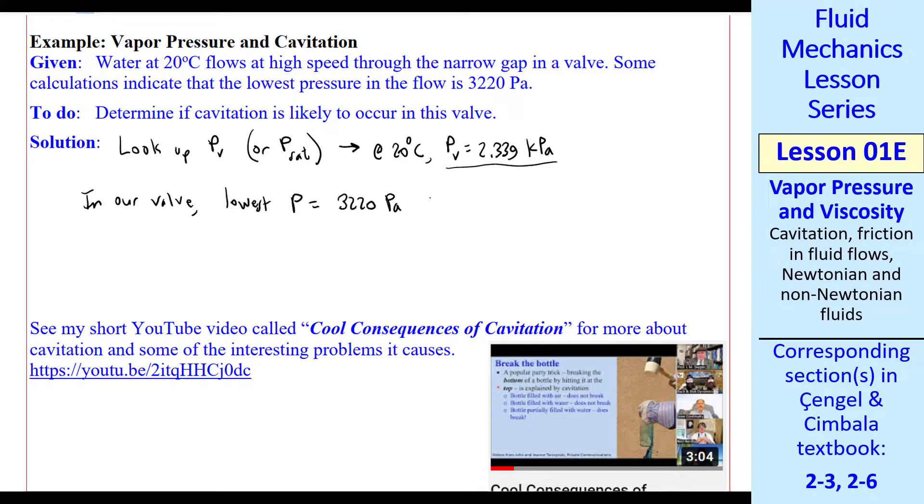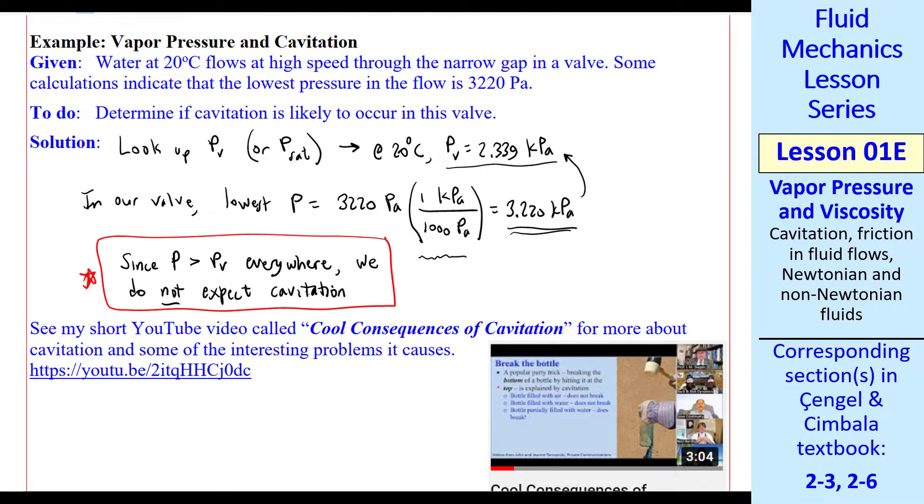In our valve, the lowest pressure is 3220 pascals. We multiply by a unity conversion factor, so this lowest pressure is 3.220 kPa. Compared to PV, this is greater. Since that's the lowest pressure, we conclude, since P is greater than PV everywhere, we do not expect cavitation anywhere in this flow.